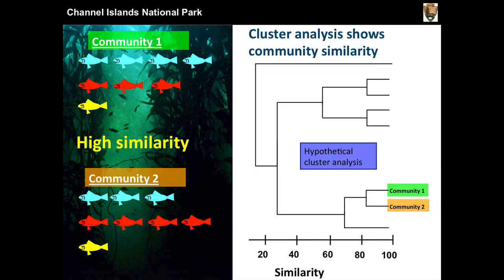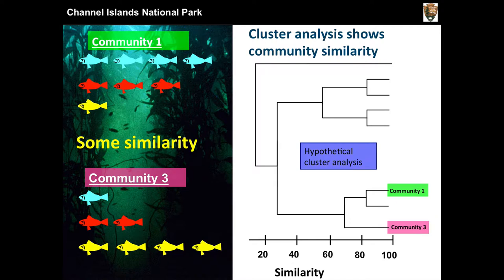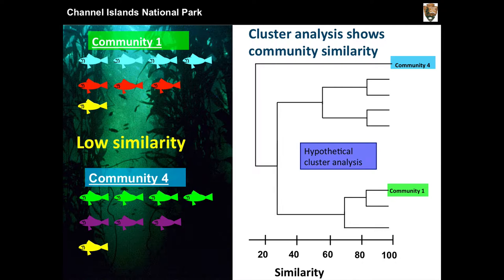In this analysis, if you have community one and community two which tend to be very similar in their composition, they're going to end up being very close together in a cluster analysis — just like a family tree, where your brother and sister from the same parents are going to be very closely related. Community one and community three will be a little bit more separate, and communities that are extremely different, like you'd expect between San Miguel and Santa Barbara Island in the Channel Islands, are going to be very different in their tree.